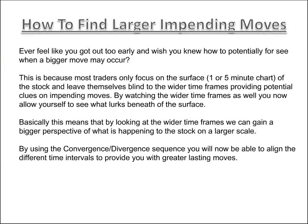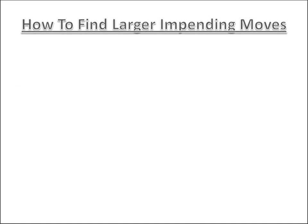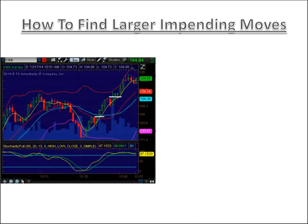A lot of people get out too early because they're not looking at wider time frames. Here's an example: on the one-minute, we have a mini-pup entry. As the selling candle held the 5MA, we took the next candle long. Our target range is from the middle Bollinger Band to the upper Bollinger Band, or the break of the 5-period moving average — whichever comes first. We stopped out when it broke the 5MA.